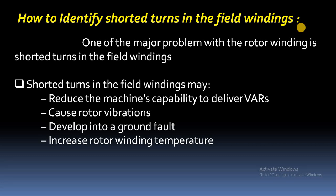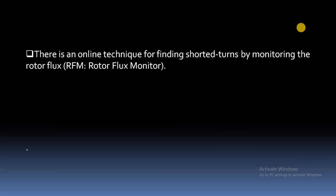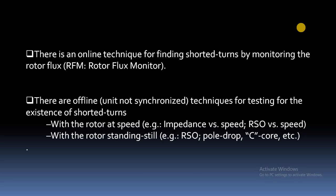Because of these disadvantages, we have to identify the shorted turns. To identify them in the field winding, we broadly have two methods: one is the online technique and another is the offline technique. The online technique is the rotor flux monitoring technique — in real time we monitor the air gap flux, thereby identifying which pole has shorted turns. The offline technique means we are not synchronizing the unit.